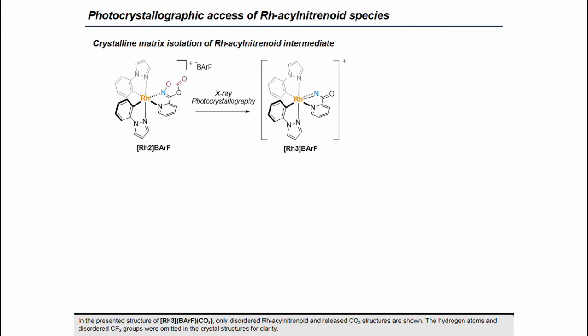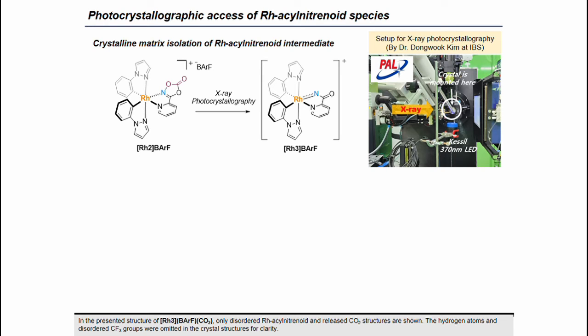We were curious whether we could monitor the formation of rhodium acyl nitranoid species from the rhodium dioxazolone complex. To test this idea of light-triggered decarboxylation, we conducted an X-ray photocrystallographic analysis. This experiment was done by Dr. Dong-uk Kim at IBS, and we conducted the experiment at Pohang Accelerator Laboratory, which provides synchrotron radiation. For the setup, we placed an external 370 nm light source beneath the sample, and upon irradiation, we conducted X-ray diffraction analysis using synchrotron radiation at 100 K. Benefiting from the synchrotron radiation, data collection could be finished within a few minutes.